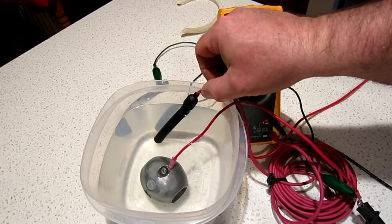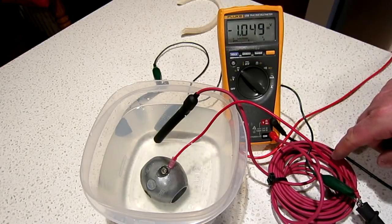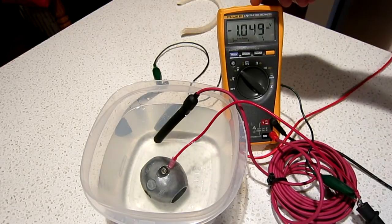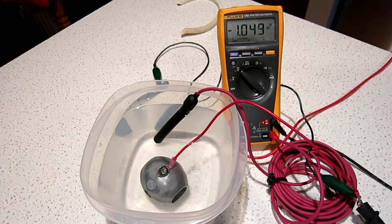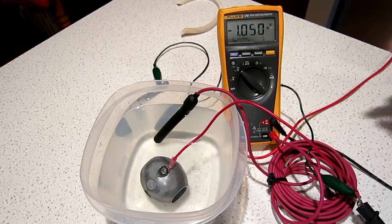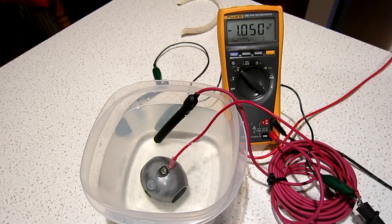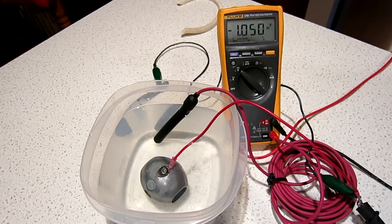This is my silver-silver chloride reference cell. I use this for testing corrosion on boats. It's plugged into my multimeter, and right now we're reading negative 1,049 millivolts DC, or negative 1,050. That is the protection that the zinc in there offers.